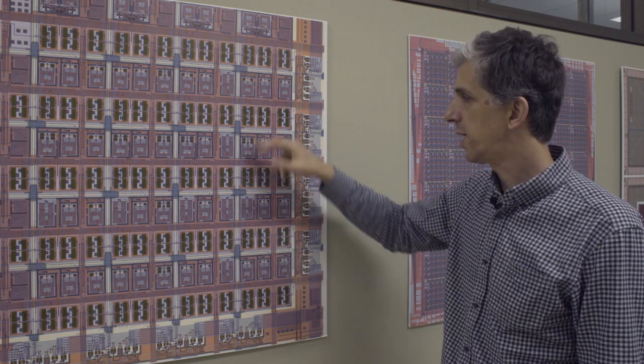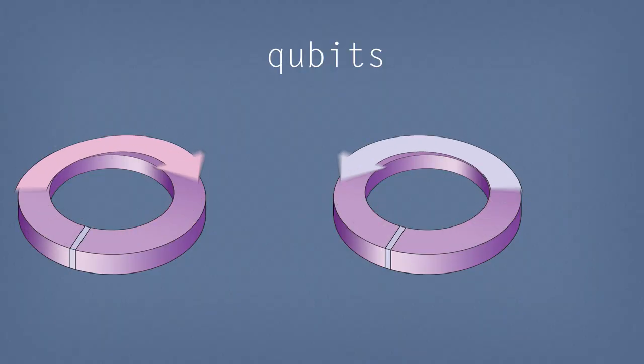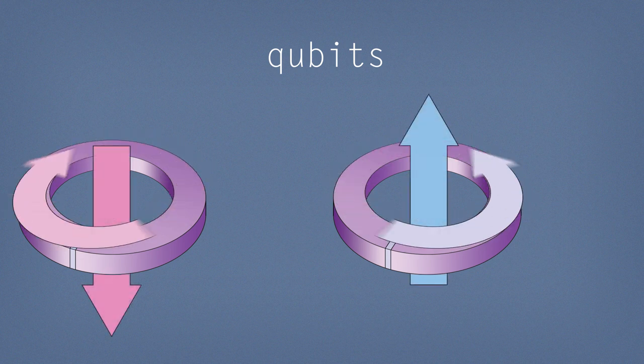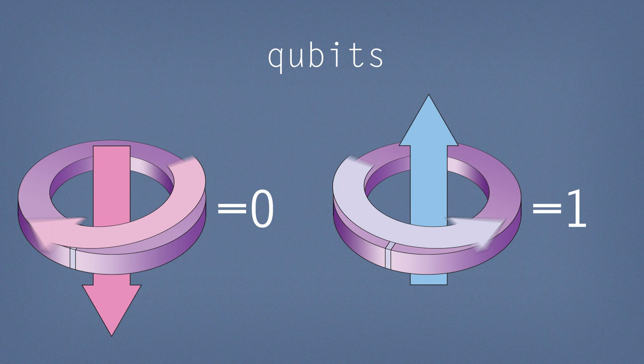A qubit is engineered so that there are two stable states corresponding to circulating current going clockwise or counterclockwise and associated with those two stable states are magnetic field either coming out of the surface or into the surface. And they correspond to the zero and the one state respectively for the qubit.